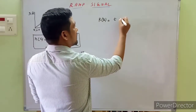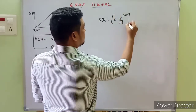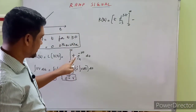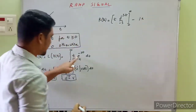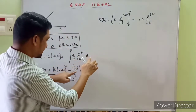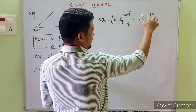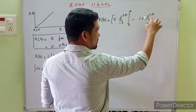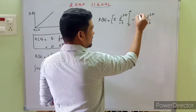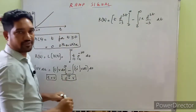The integral of e raised to minus st is e raised to minus st upon minus s. We substitute the lower and upper limits. Then, minus the derivative of t, which is 1, multiplied by the integral of e raised to minus st upon minus s — this entire product is integrated again with respect to t, with limits 0 to infinity.